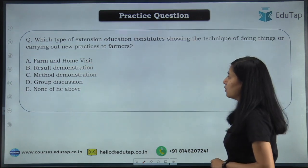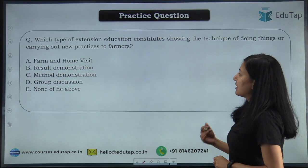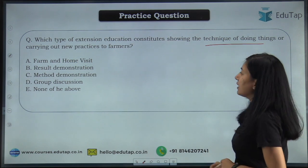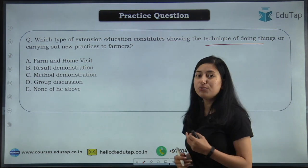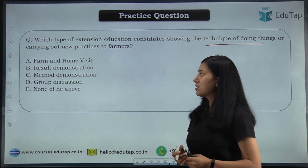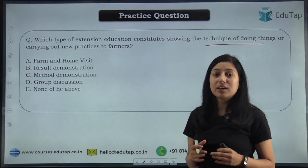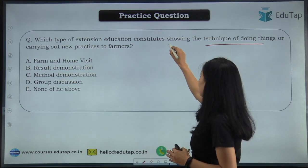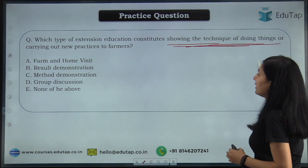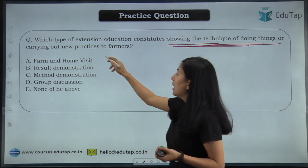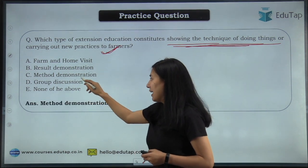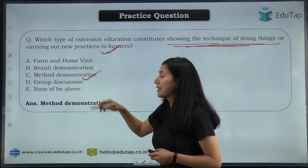Moving on to the next question: which type of extension education constitutes showing the technique of doing things or carrying out new practice to farmers? Options are farm and home visit, result demonstration, method demonstration, group discussion, none of the above. Here you can see that we are showing the technique of doing a thing or carrying out a new practice to the farmer — so that will be your method demonstration. The right answer is method demonstration, where you are showing the method to the farmers.